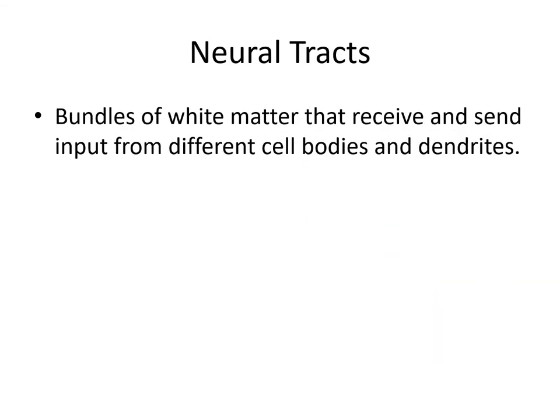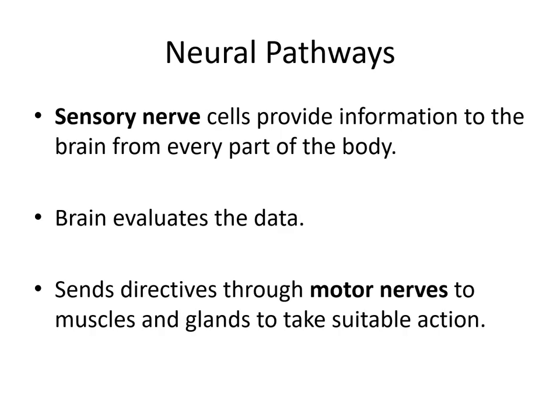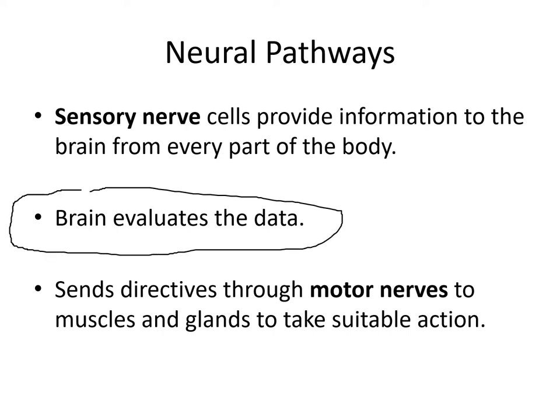Recall that we described neural tracts in lecture one — bundles of white matter that receive and send input from different cell bodies and dendrites. Neural pathways require sensory nerve cells to provide information to the brain from every part of the body. It is the brain that determines what to do with it — it evaluates the data, and if it wants to act on it, it does; otherwise, it ignores it. It will send directives through the motor nerves to muscles and glands to take suitable action.